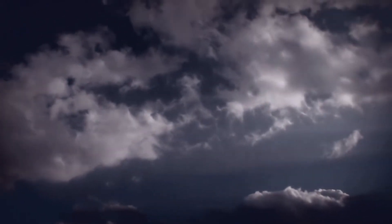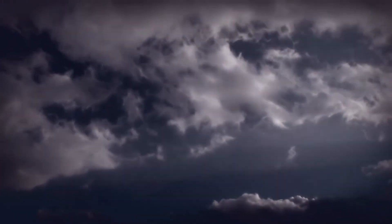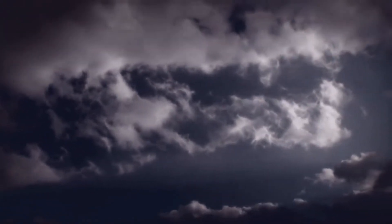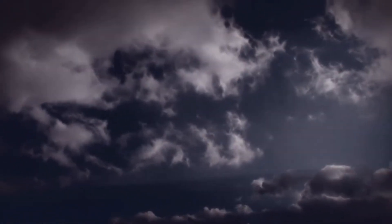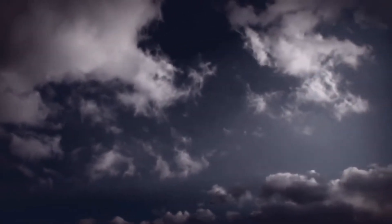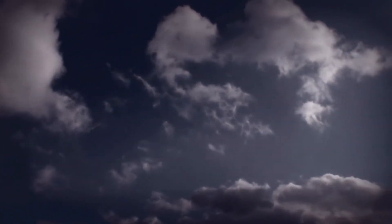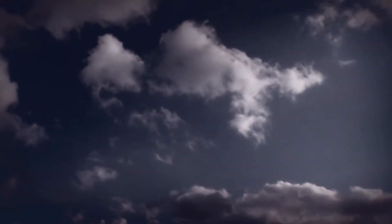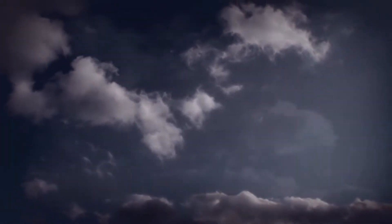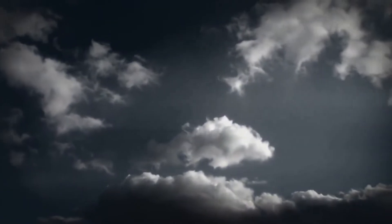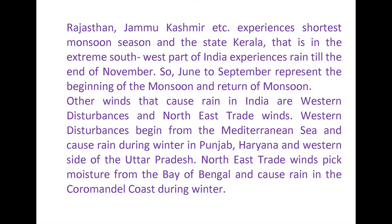Rajasthan, Jammu Kashmir, etc. experience the shortest monsoon season, while Kerala, in the extreme southwest part of India, experiences rain till the end of November. June to September represents the beginning and return of the monsoon. Other winds that cause rain in India are western disturbances and northeast trade winds. Western disturbances begin from the Mediterranean Sea and cause rain during winter in Punjab, Haryana, and the western side of Uttar Pradesh. Northeast trade winds pick up moisture from the Bay of Bengal and cause rain on the Coromandel Coast during winter.